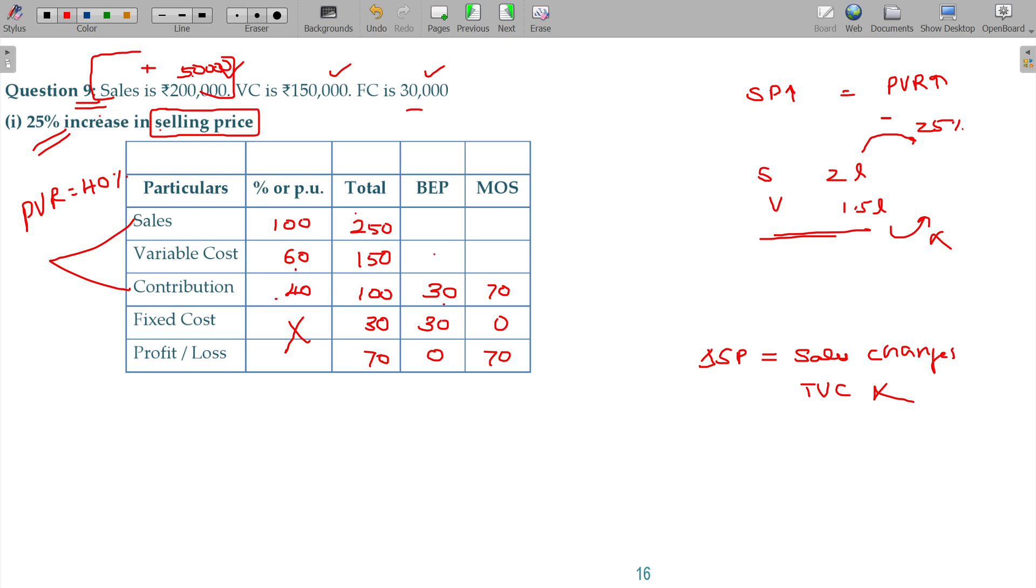40 share, 30, 60 share, 45 should be the BEP and 75 should be BEP over variable cost. Sorry, 150 should be the margin of safety and this should be BEP.